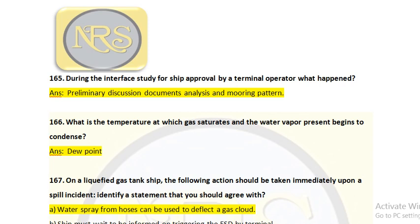Remember, the cool-down process should not exceed minus 10 degrees Celsius per hour. It should be carried out at a rate of 5 to 10 degrees Celsius per hour. Extremely fast cooling will damage the tank, pipeline, etc. So many things are discussed and the process is carried out accordingly.